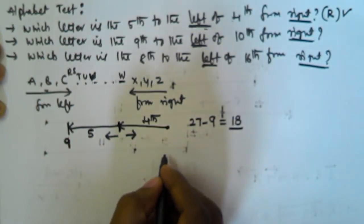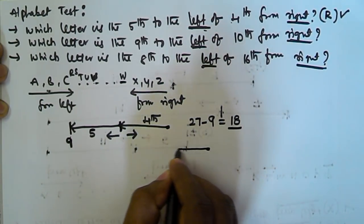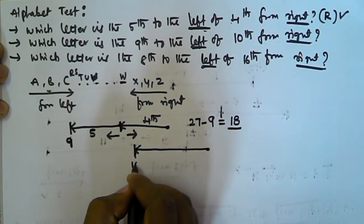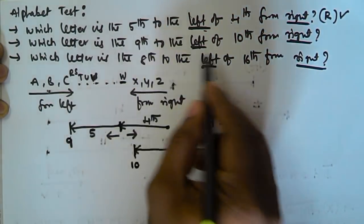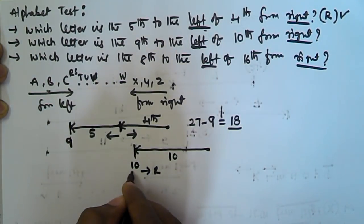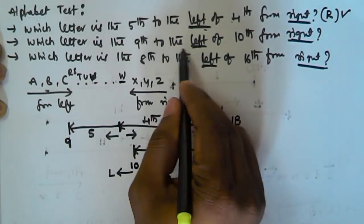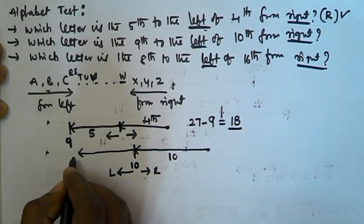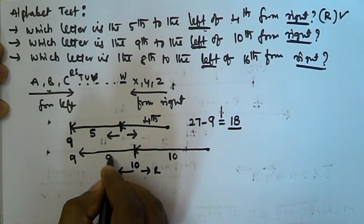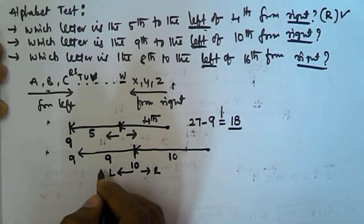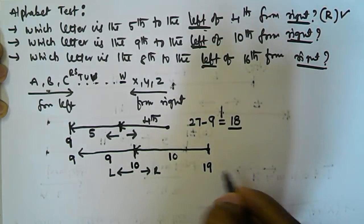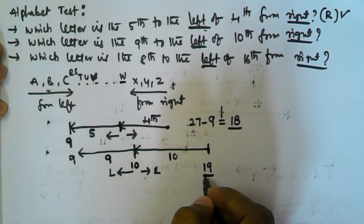Next problem: which letter is the ninth to the left of the tenth from the right? We start from Z and move ten positions. We find the tenth letter here. Then we move nine positions to the left of that. So the total positions moved from the right is ten plus nine, which is nineteen.